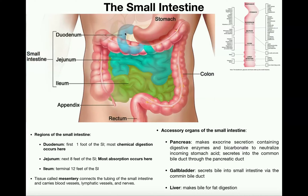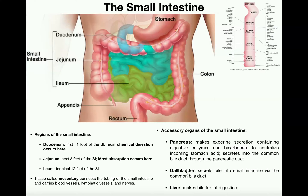The pancreas secretes these substances into the duodenum through the pancreatic duct, which merges with the common bile duct and ultimately squirts those secretions into the duodenum — we'll cover that in a separate video. A second accessory organ of the small intestine is the gallbladder, whose function is to store bile that's actually made in the liver. The liver sends bile to the gallbladder, and then the gallbladder secretes that bile into the duodenum for fat digestion.